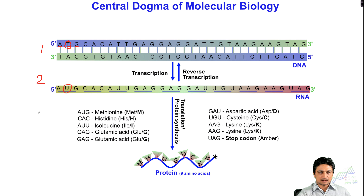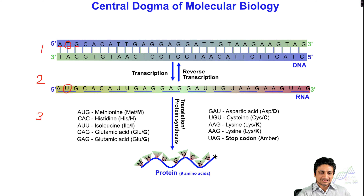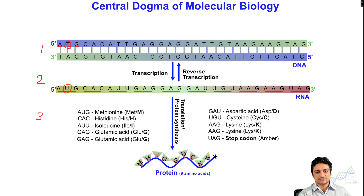The third step is the flow of information from RNA to protein, which is called translation, also called protein synthesis. In this step, each three nucleotides form a codon. In this figure in RNA, we can see AUG, which is converted into methionine.